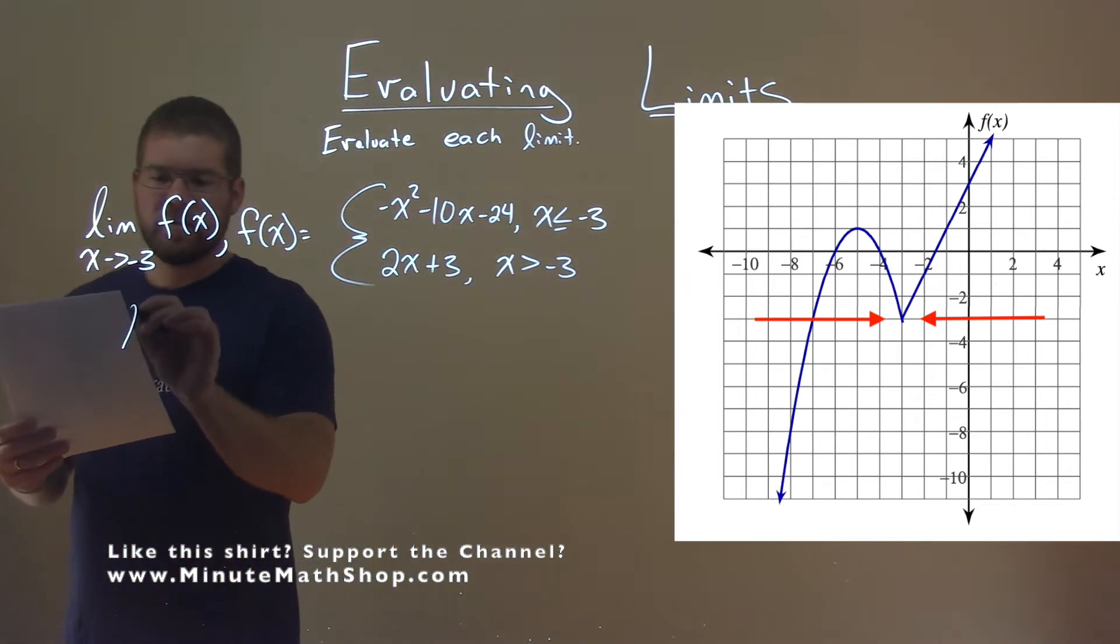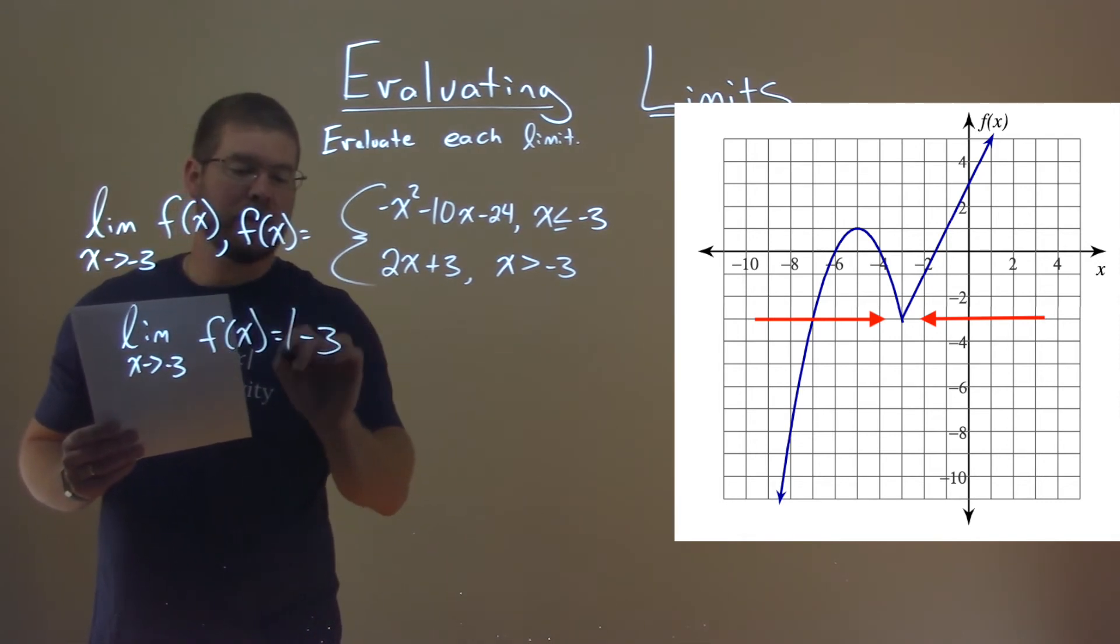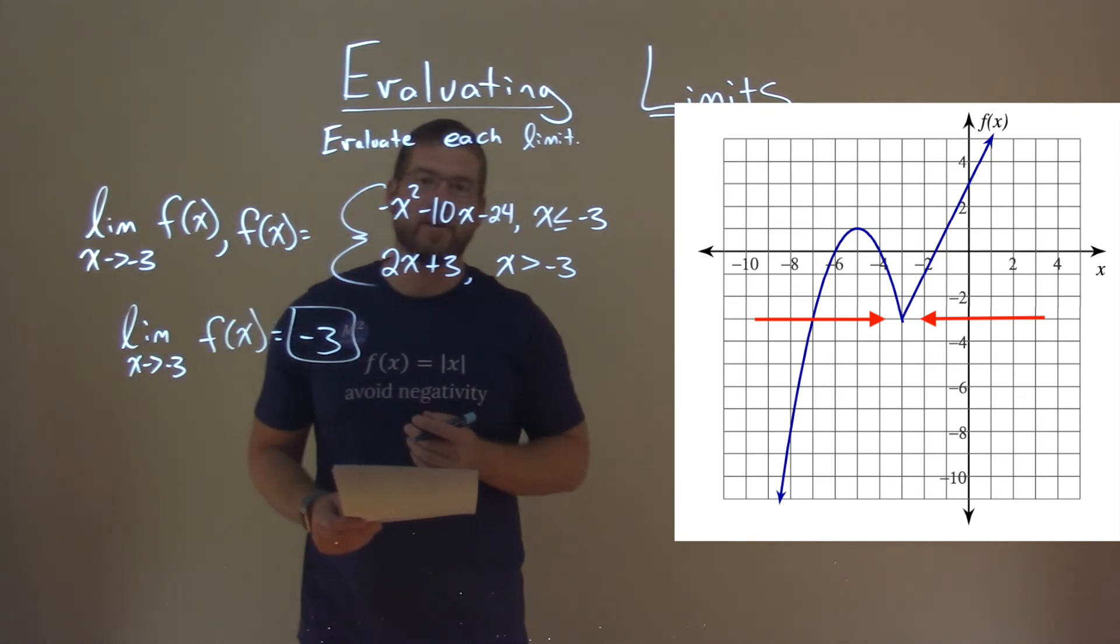So we would say that this limit as x approaches negative 3 of f(x) is equal to negative 3, and that is our final answer.